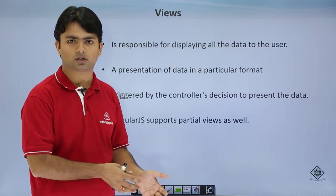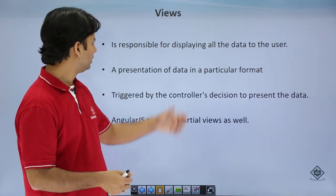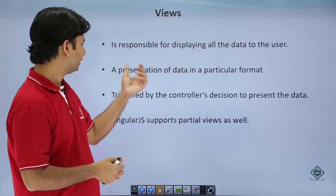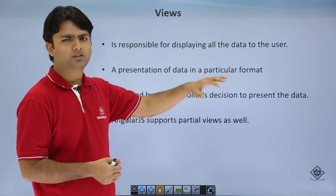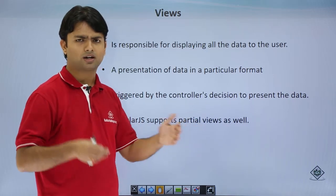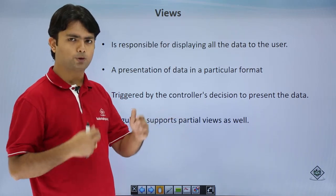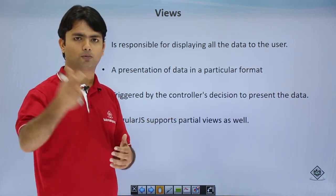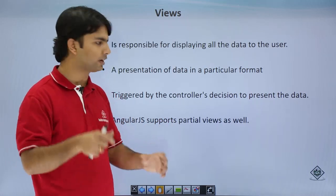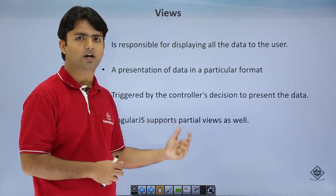As we saw in the Model View Controller, a view is anything which a user sees — simply an HTML page. It is responsible for displaying the data to the user in any particular format. It will be triggered by the controller, which determines which particular view should be sent on a page, so that appropriate data comes from the model and is rendered by the view. The complete action is managed by the controller, and we can use partial views as well.